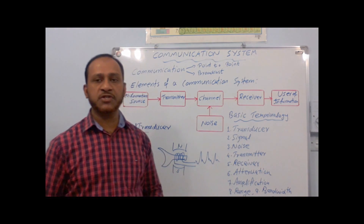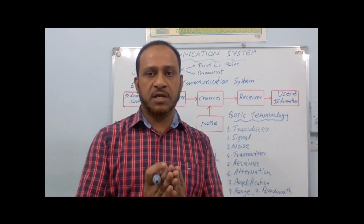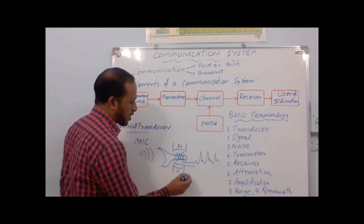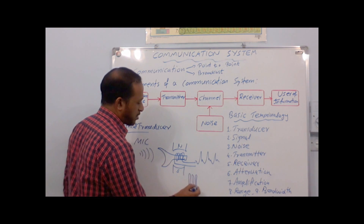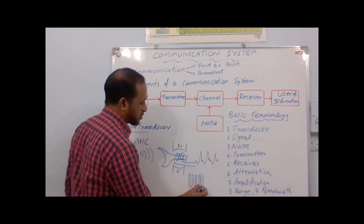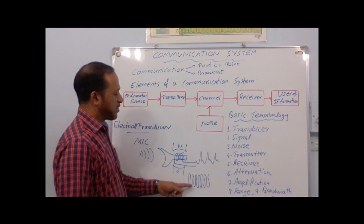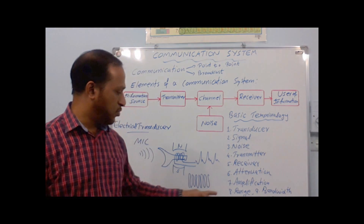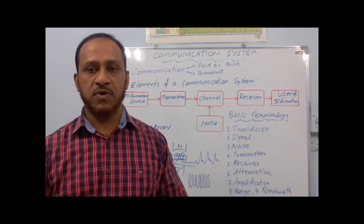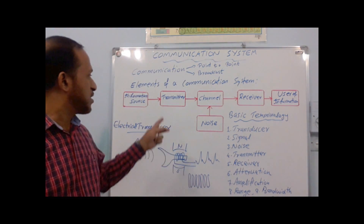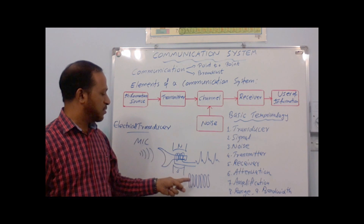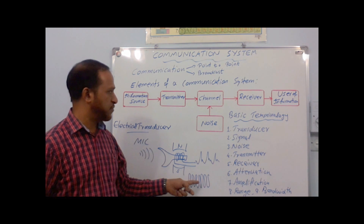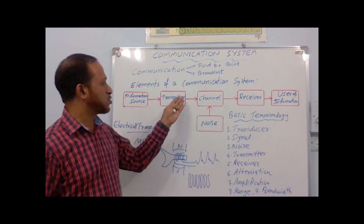Modulation means superimposing the message signal on a high-frequency carrier wave. In a transmitter, there will be an oscillator which produces a high-frequency carrier wave in kilohertz or megahertz. This high-frequency carrier wave and the audio message signal will be superimposed — that process is called modulation. We will discuss modulation in detail in another video. After modulating, the audio signal is superimposed on the high-frequency carrier wave, and then it will be transmitted through the antenna.